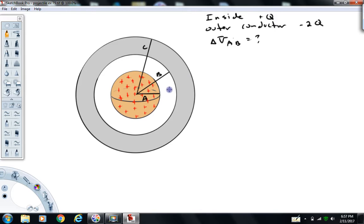And what we're going to try to do here is calculate the difference in potential between A and B, so meaning that the difference in potential between this surface and this surface. And while we're at it, we'll go ahead and calculate the potential difference between A and C as well.